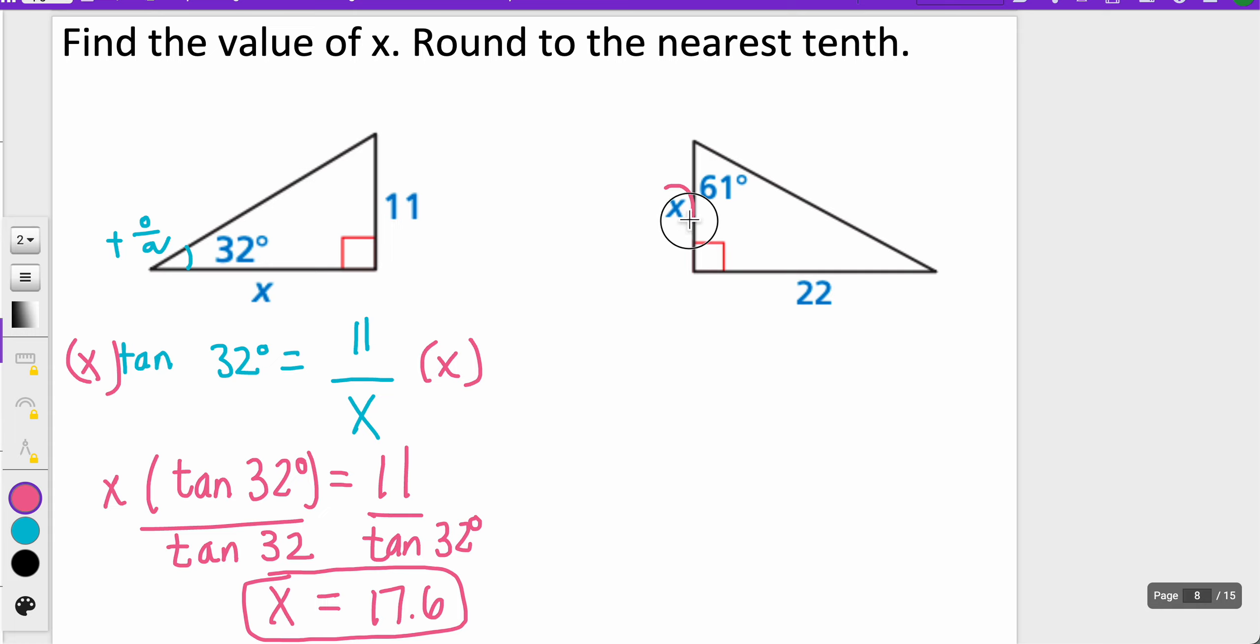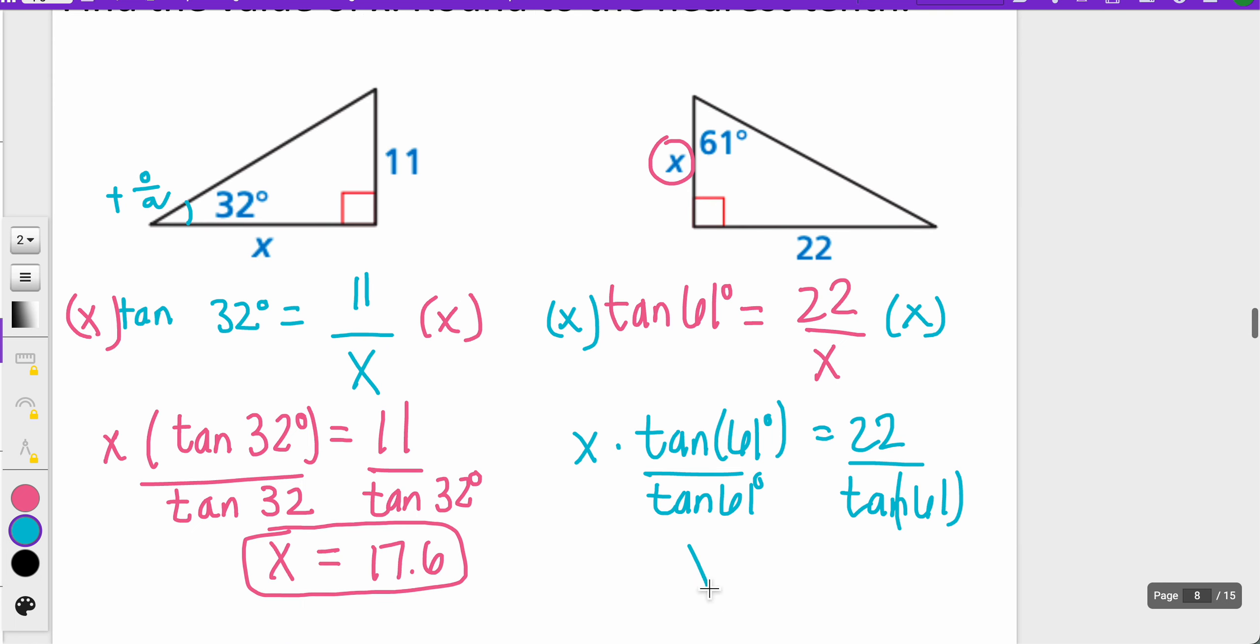The next one I have is, I'm looking for X here. Again, I can still use my understanding of tangent. I have the tangent of 61 degrees, and I want to be able to find that by doing opposite over adjacent. So that's 22 over X. Again, I'm going to multiply both sides by X, so I can bring X to the top on this left side. This will be X times the tangent of 61 degrees is equal to 22. Then I'm going to divide both sides by tangent of 61 degrees to figure out what my X is equal to. And that will give me about 12.2.